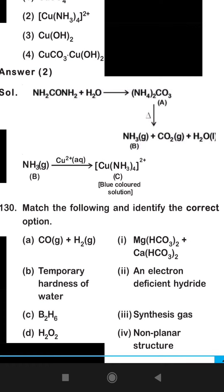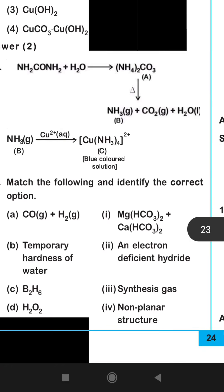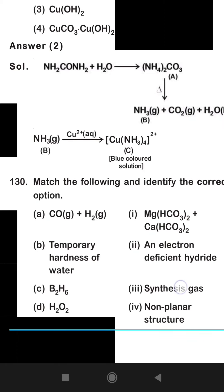B2H6 is an electron deficient hydride. It forms dimers - B2H6 is in the form of dimer, otherwise it is BH3. H2O2 is non-planar structure, non-planar structure.